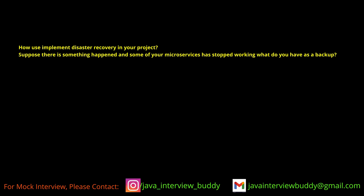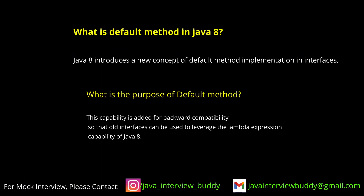How are you implementing disaster recovery in your project? Suppose something happened and some of your microservices stopped working — what do you have as a backup? We don't have such a thing, but in case any service is down, we can first check the health check of the service. If the service is not responding, we can log into the application server, check for issues, and as an immediate alternative, try to run another instance of that service.